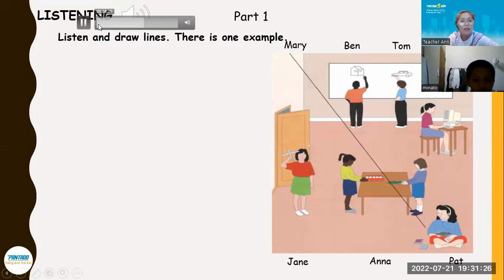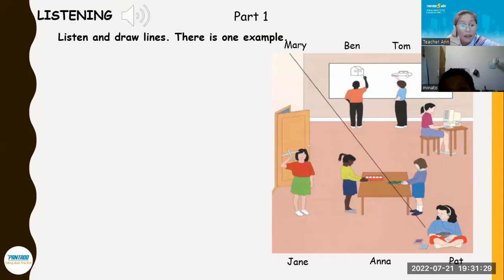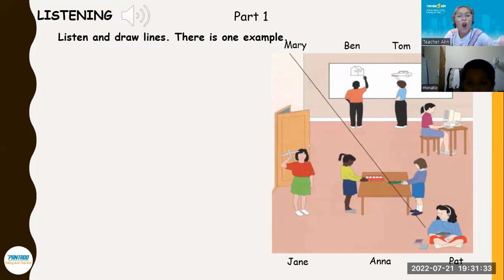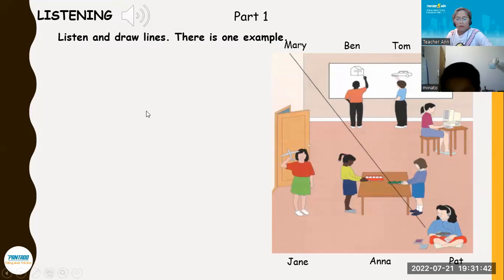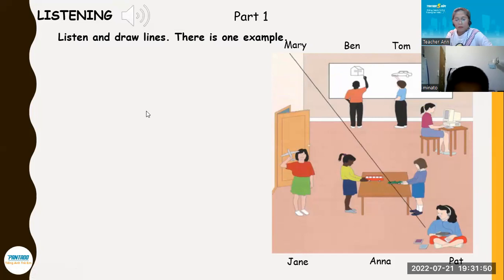One. Can you hear? Where's Tom? He's drawing a picture on the board. Tom — there are two boys drawing. Which one is Tom? He's drawing a car. Oh yes, I can see him now. Two. Where's Jane? She's playing with a toy. Is she playing with a toy plane? No, she's playing with a bus. Oh yes, I can see her.